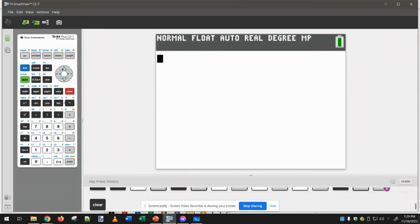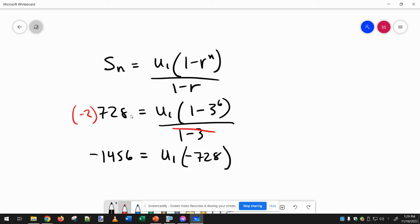We can do that for you here, just type it in exactly like this, 1 minus 3 to the power of 6. Okay, so then divide both sides by negative 728.